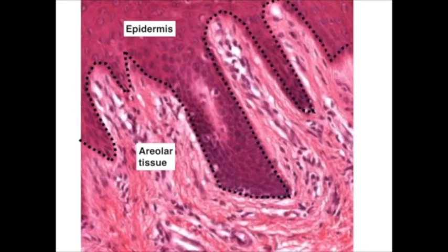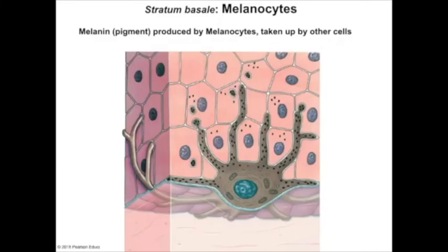Also within the stratum basale are an entirely different type of cells — not keratinocytes — called melanocytes. Melanocytes produce the pigment melanin, which is taken up by the surrounding cells of the stratum basale and stratum spinosum.